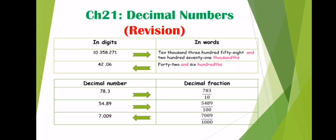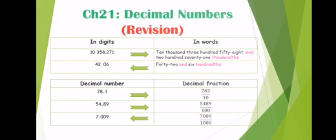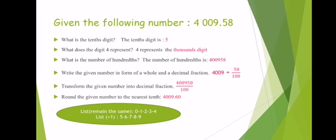The last one — we have to transform the decimal fraction into a decimal number. We write the numerator as it is, and we have to decide where to put the point. We have one thousand in the denominator — three zeros — so we should have three digits after the point. Now the next exercise: given the following number four thousand nine point fifty eight.